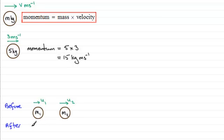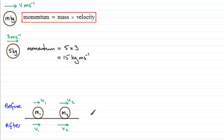After they hit one another, they move off with other speeds. The final speed of m1 we'll call v1, and the final speed of m2 after the collision we'll call v2. Assuming that the two particles are smooth and moving on a smooth surface, and providing there are no external forces acting on the system restricting movement, when they collide we get something called an impulse — a bash in opposite directions.